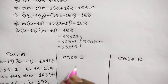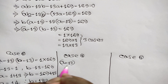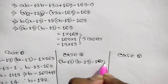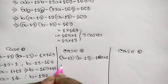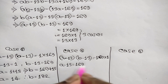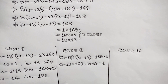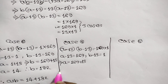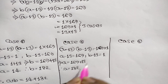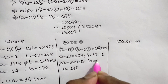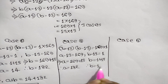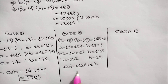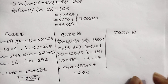Case number 2: a minus 13 times b minus 13 equals 169 times 1. So a minus 13 equals 169 and b minus 13 equals 1. Therefore a equals 169 plus 13, so a equals 182, and b equals 1 plus 13, so b equals 14. Finally, a plus b equals 182 plus 14 equals 196.